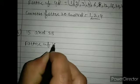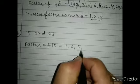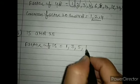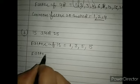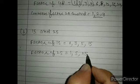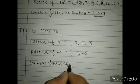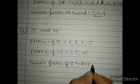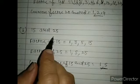Now the second question: find the common factors of 15 and 25. Factors of 15 are 1, 3, 5, and 15. Factors of 25 are 1, 5, and 25. The common factors of 15 and 25 are 1 and 5. Now you will do the remaining parts of question number 1.